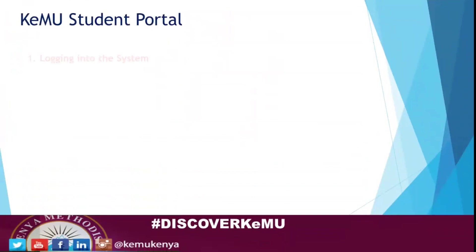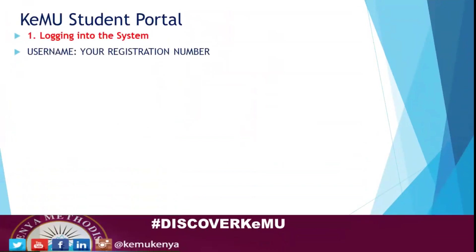The first thing you need to do is log into the system. To log in, you use your username and your registration number. There's also an assigned default password that was given to all of you, but you are supposed to change it to something you can remember and that is secure, so that no one can access your portal using your registration number and the default password.